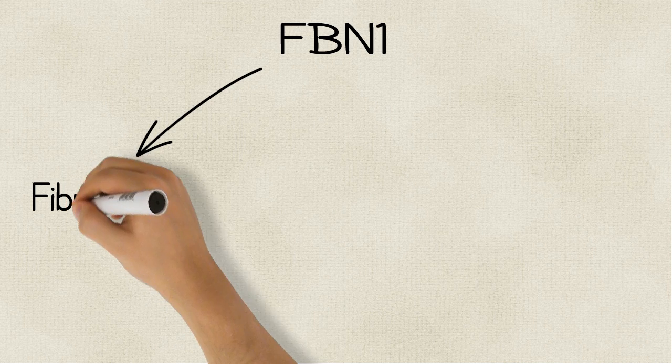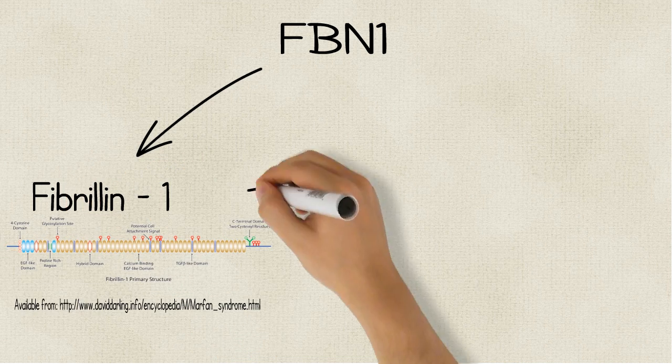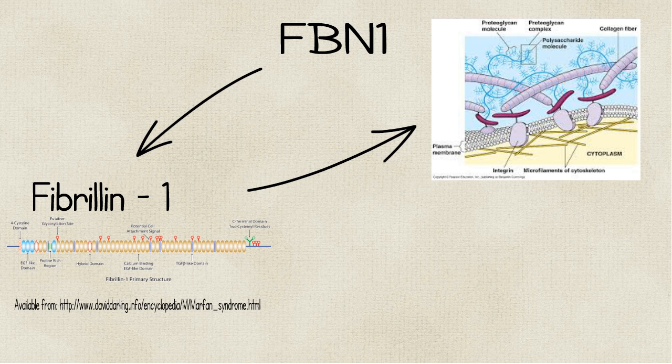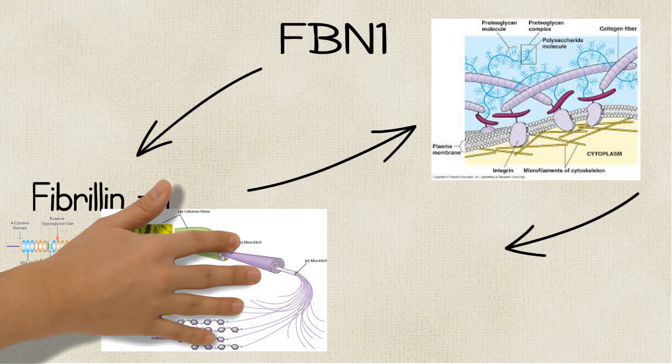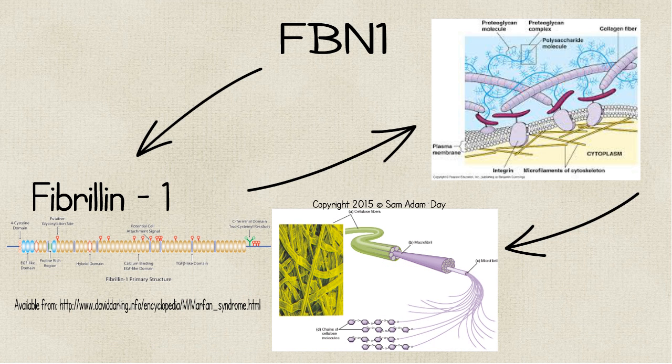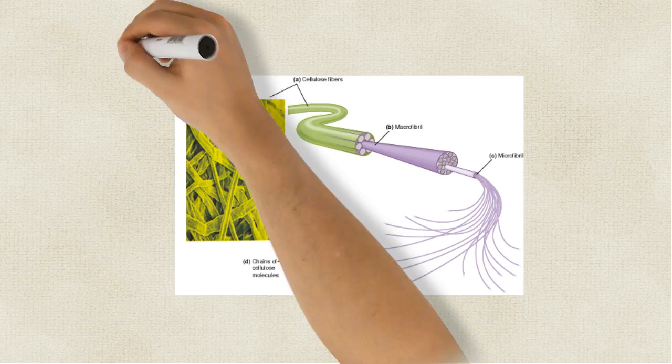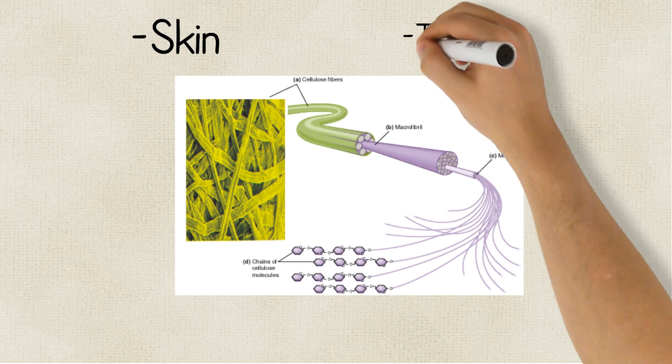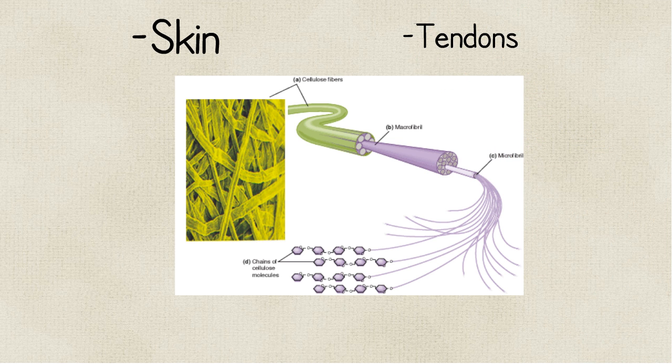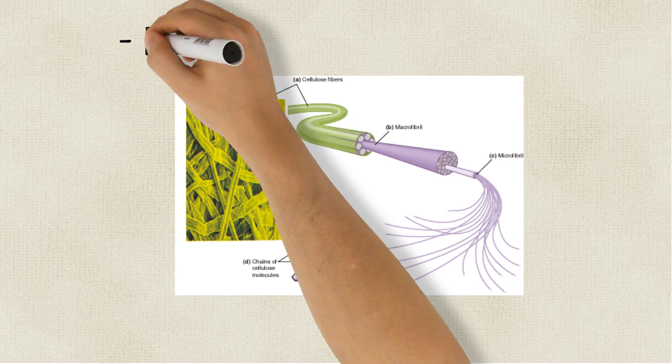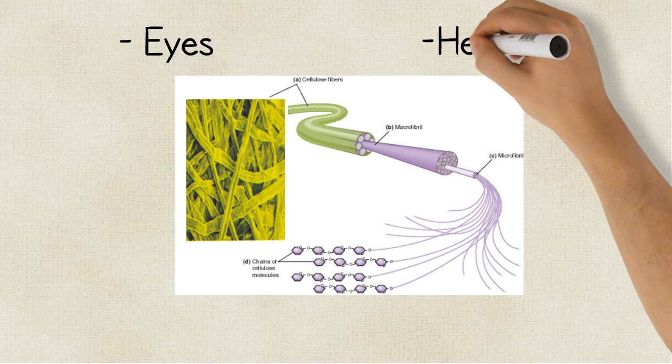The FBN1 gene codes for making the protein fibrillin-1. This protein is found in the extracellular matrix, where it binds to other proteins to form microfibrils that are about 10 to 12 nanometers in size. These microfibrils are elastic fibers that allow the skin, tendons, and vessels in the body to stretch. They are also the main building blocks of the support structures found in the eyes, heart, and other areas of the body.